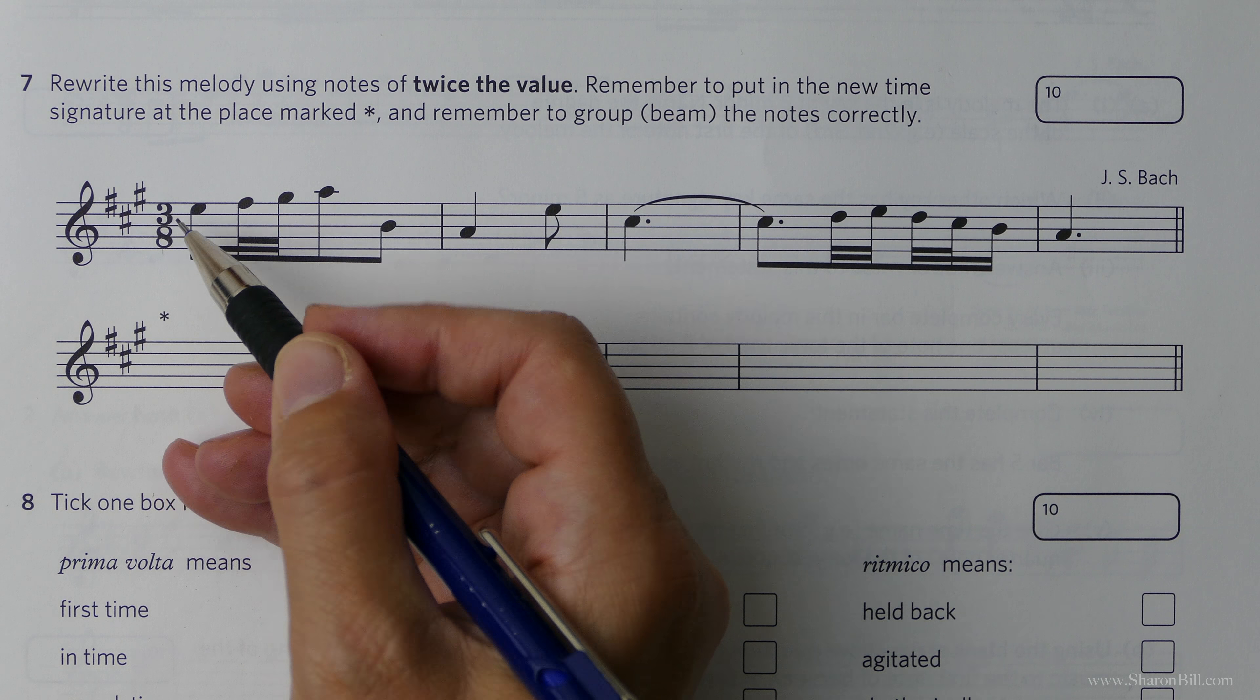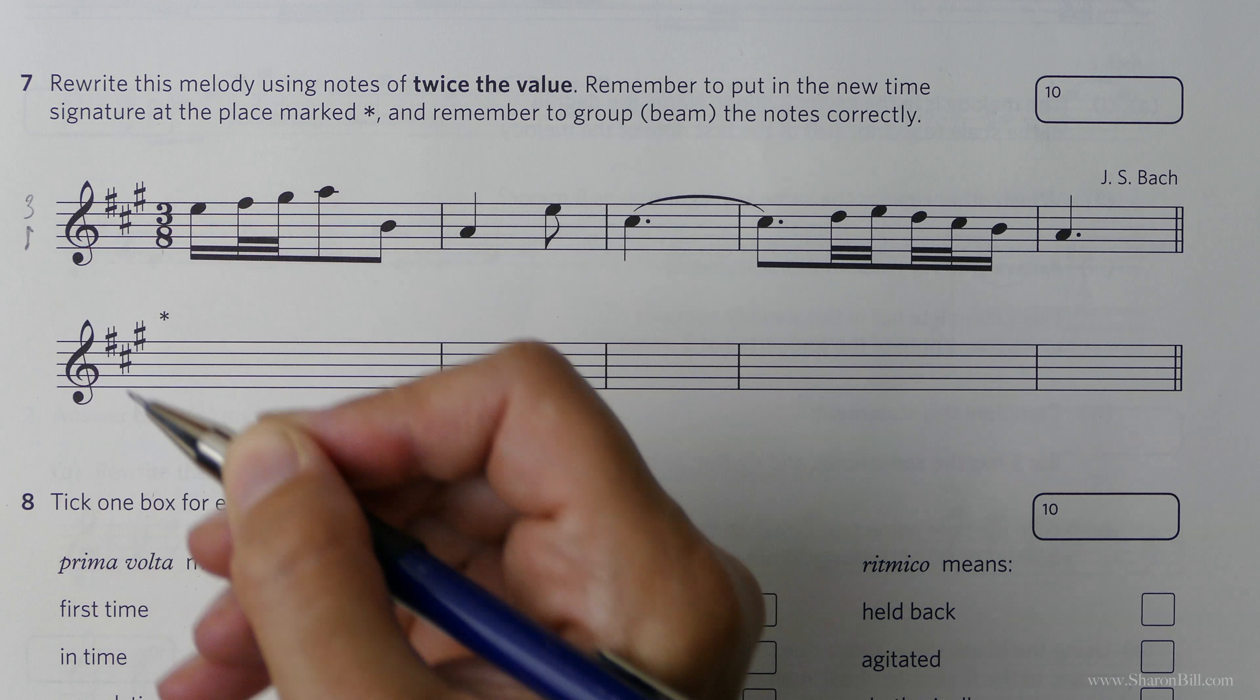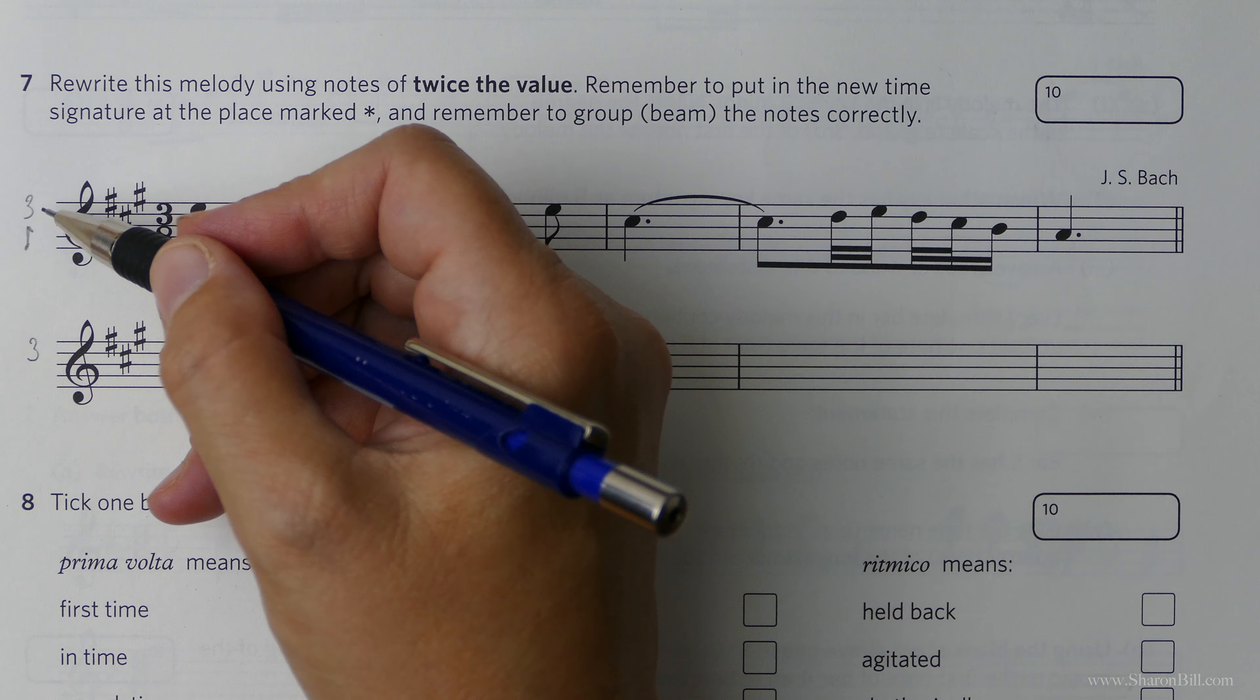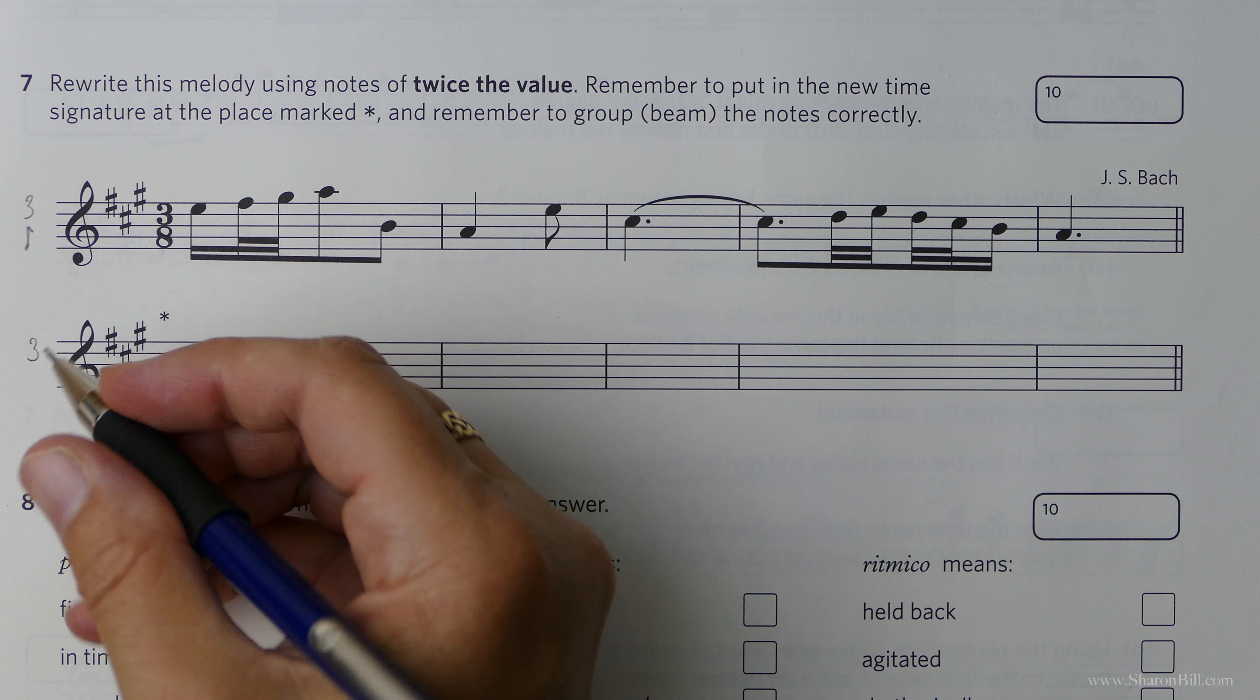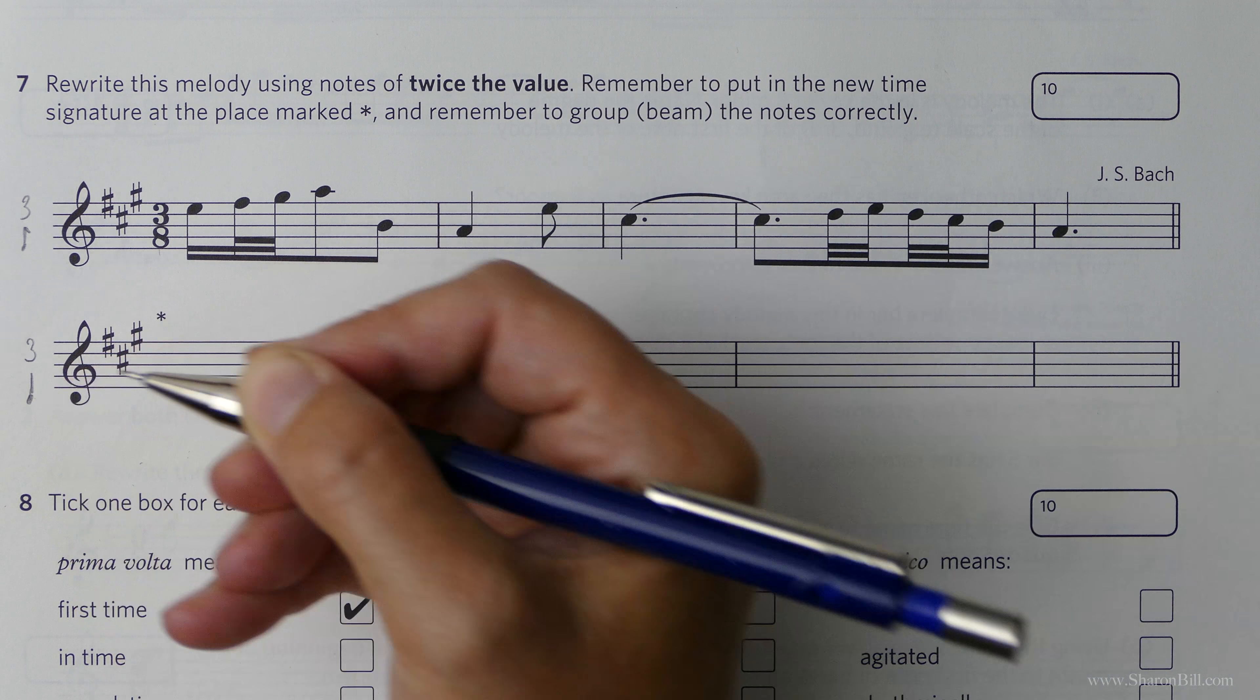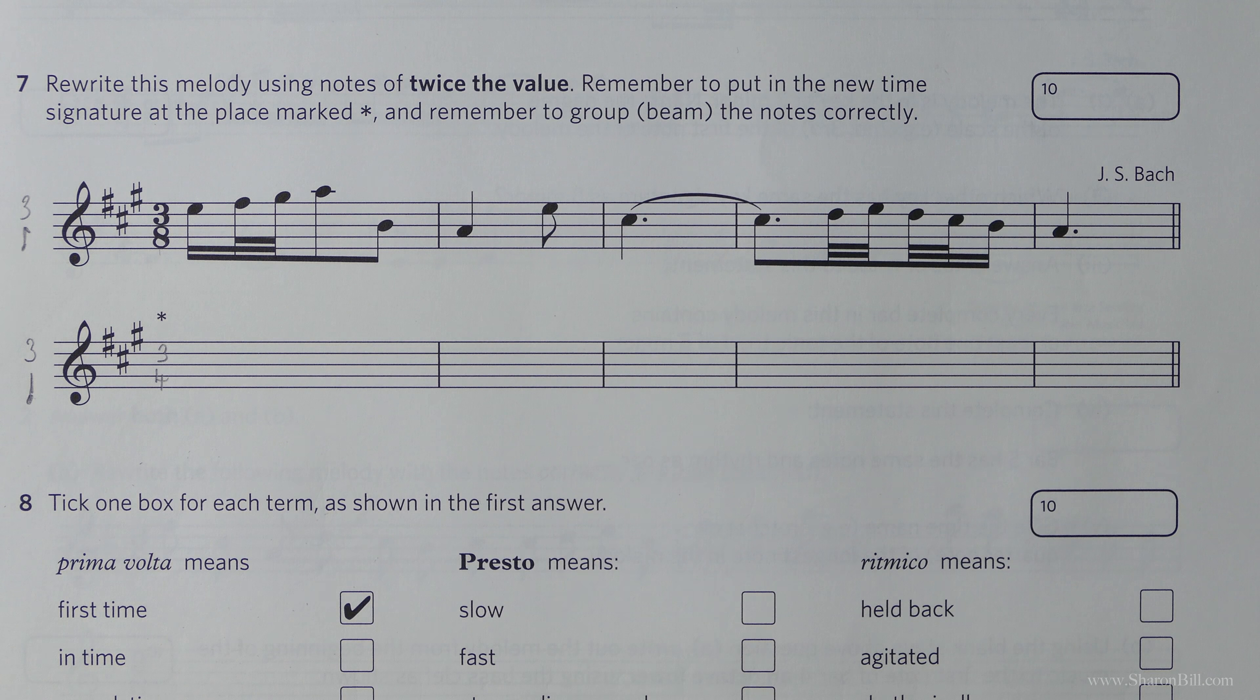At the moment we're in 3 eighth notes, 3 quaver beats per bar. The top number never changes so we still want it to be in triple time, 3 beats per bar. But to make the notes twice the value, we're going from quavers, eighth notes to crotchets, quarter notes. So the new time signature will be 3 over 4.